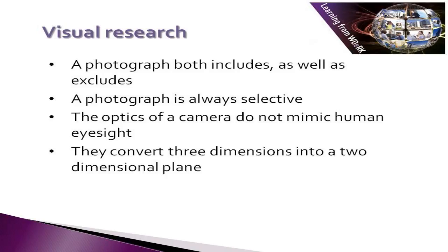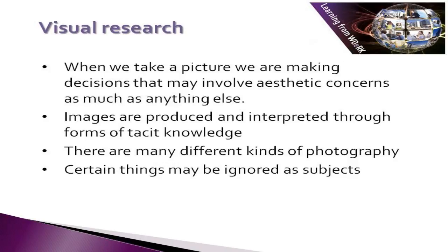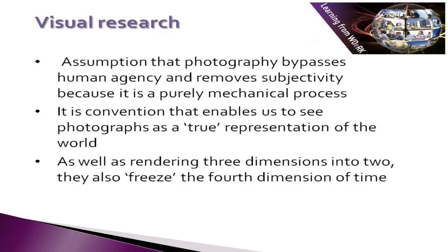All pictures, just like field notes, are selective. When we take a picture, we are making decisions that may involve aesthetic concerns as much as anything else. Images are produced and interpreted through forms of tacit knowledge. There are many different kinds of photography and certain things may be ignored as subjects. The assumption that photography bypasses human agency and removes subjectivity because it is a purely mechanical process is mistaken. It is convention that enables us to see photographs as a true representation of the world.